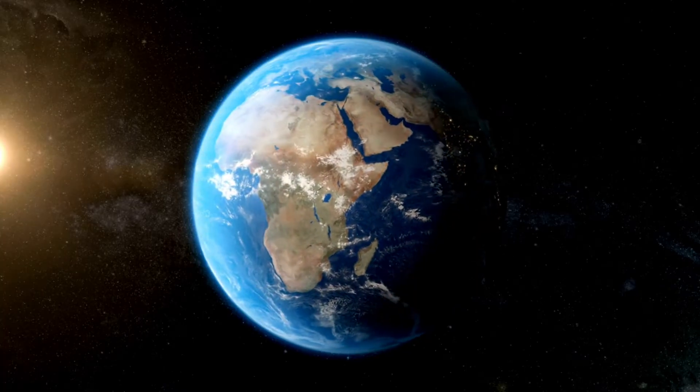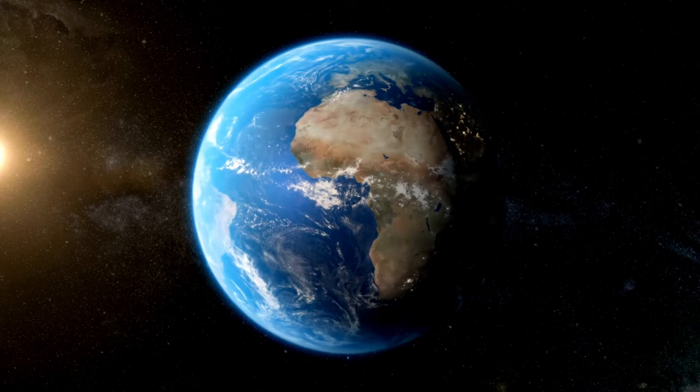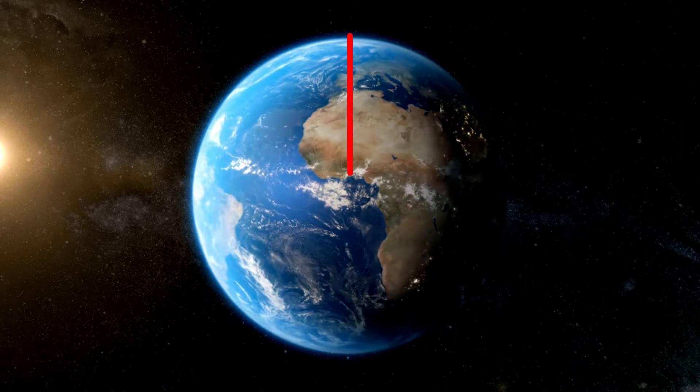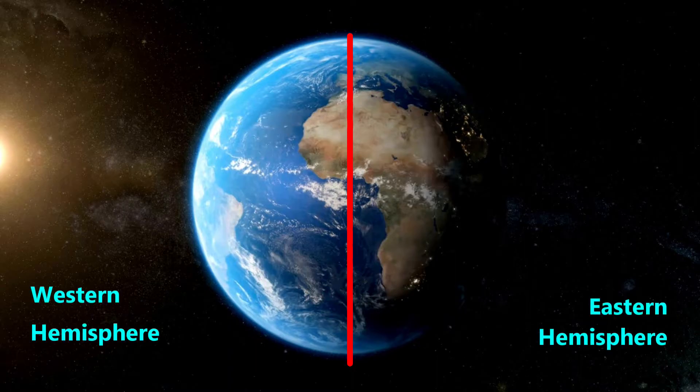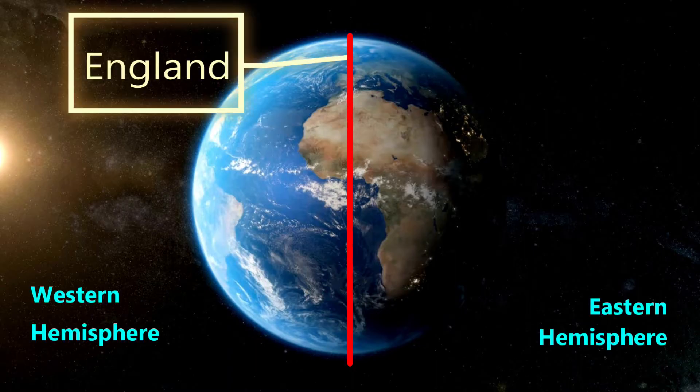Just like we divide the Earth into Northern and Southern Hemispheres by using the equator, we can divide the Earth into an Eastern and Western Hemisphere by using a vertical line in a place that everyone agrees on. People have chosen a place in London, England called Greenwich to have a longitudinal line value of zero degrees.